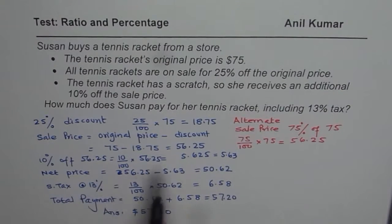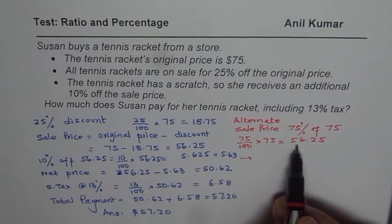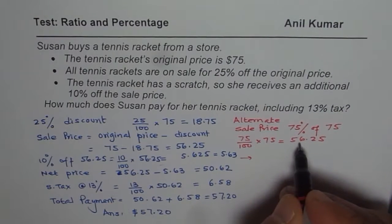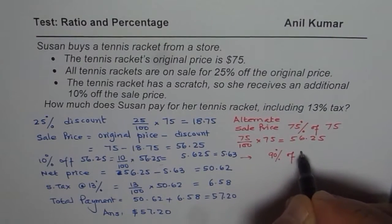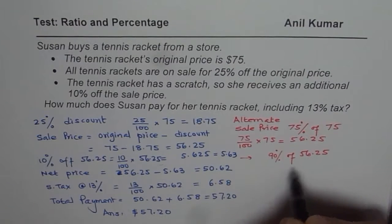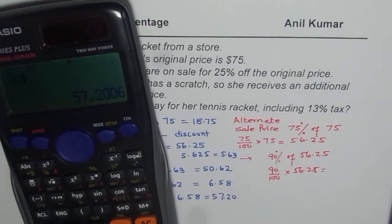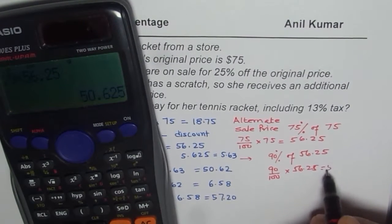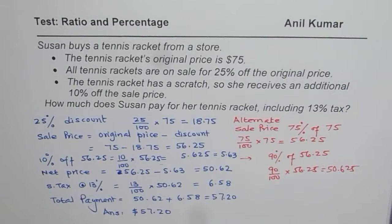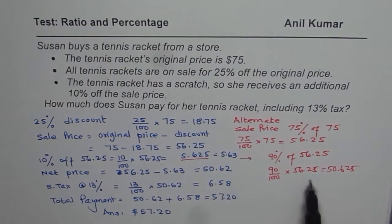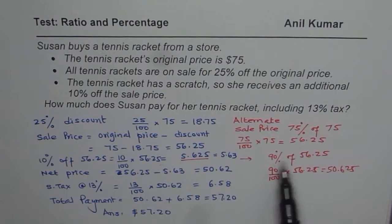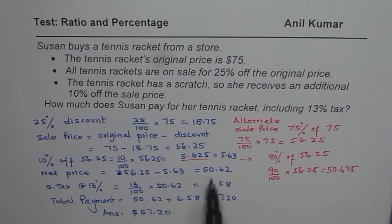As we talked about alternate methods, here also we could apply one. We have an additional 10% off, so how much do you pay? You pay 90%, correct? So we pay 90% of $56.25, which means 90/100, or 0.9, times 56.25, which equals $50.625 — the same value. So whenever you have discounts, you could calculate what you are paying directly. Once you have this value, the rest of the steps are similar. Some of you could adopt this alternate method for solving such questions.